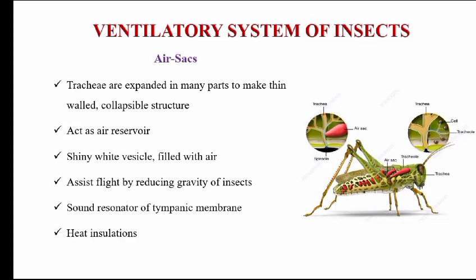The air sacs are thin-walled structures where the taenidium is absent or poorly developed. The taenidium is fully developed in tracheoles. Air sacs are a collapsible structure because the taenidium function — which prevents collapse — is absent here.